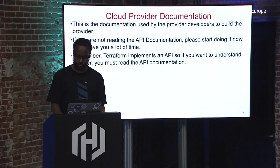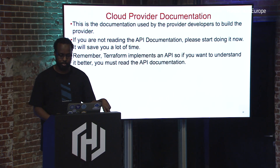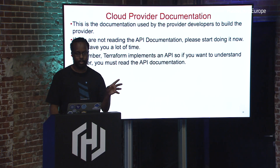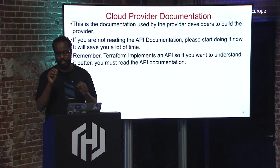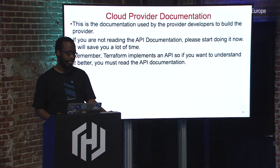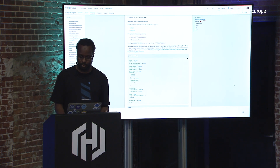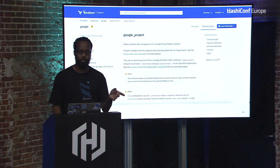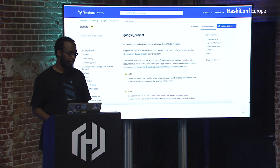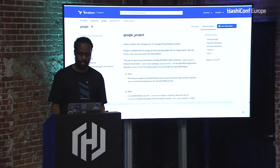Cloud provider documentation is super important. For Google Cloud in particular, on every resource at the top there's a link to the exact API documentation for that resource. The documentation on registry.terraform.io can be out of date sometimes because the cloud vendor will update API field descriptions. For the latest set of acceptable values, check the API docs directly. Terraform implements an API, so please read the API documentation. I'll call out a few things in the Terraform provider documentation — number one, at the top there is a version selector, which is a new feature that helps you find docs for the exact provider version you're using.